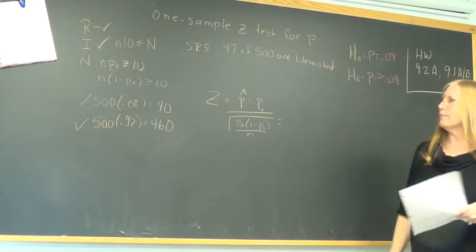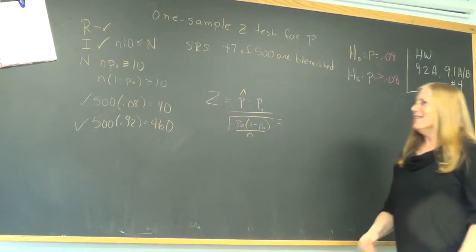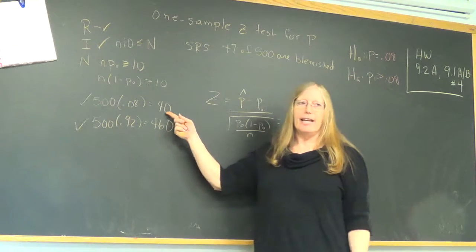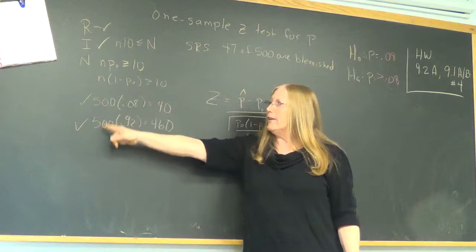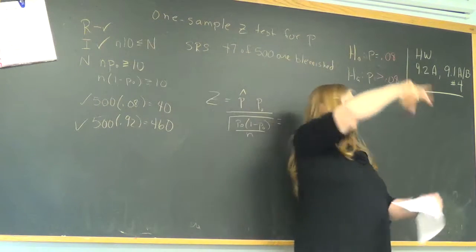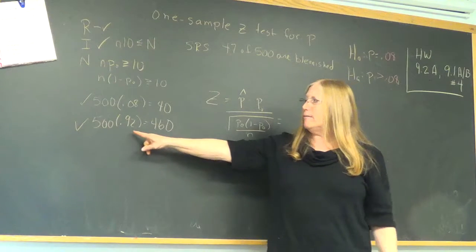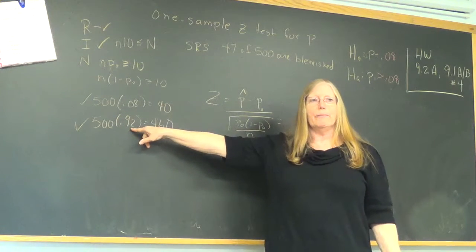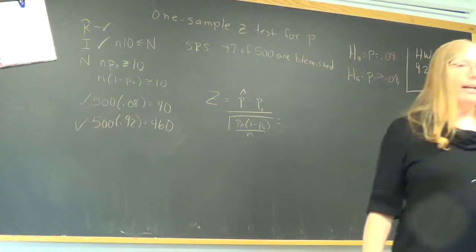The N equals 500. N was 500. P-naught? 0.08. And N times 1 minus P-naught is 0.92. All right. Now, can you work ahead of me and find the z-score for this problem? Go ahead and start toward it. Nothing's going to be different so far.